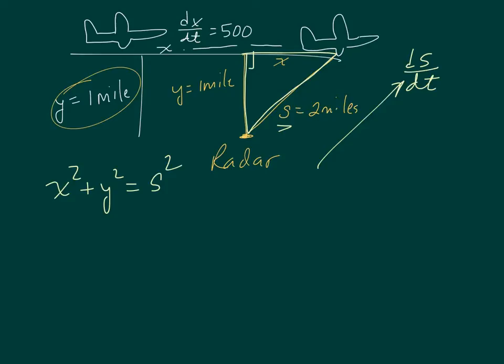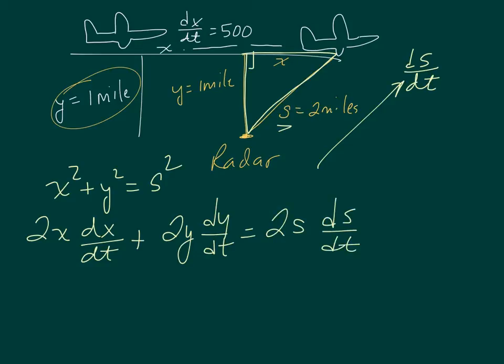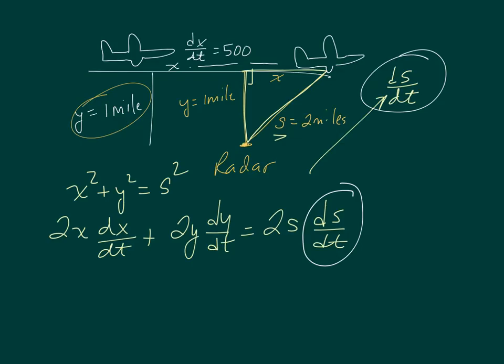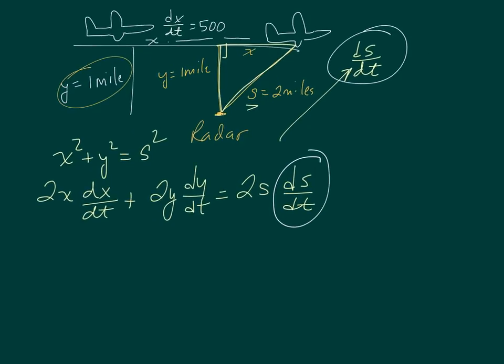Taking the derivative with respect to time, I get 2x(dx/dt) + 2y(dy/dt) = 2s(ds/dt). That's what we're solving for. So I can start plugging in things that I know. I know dx/dt is 500.